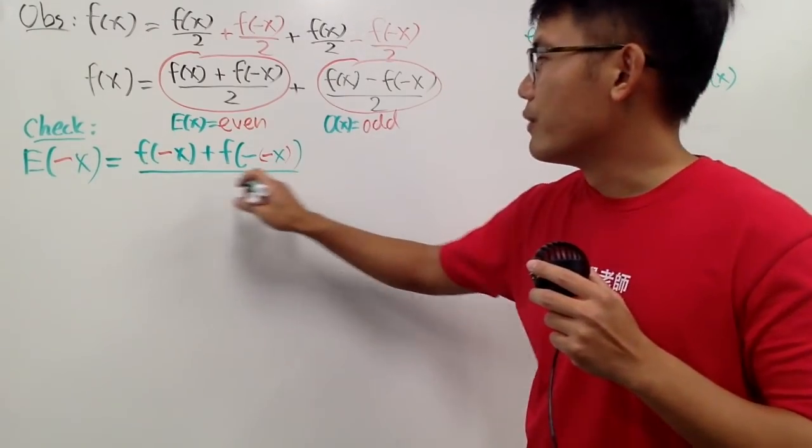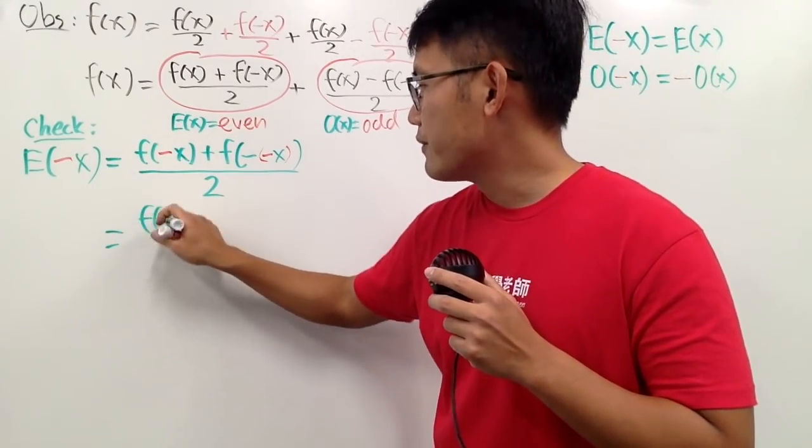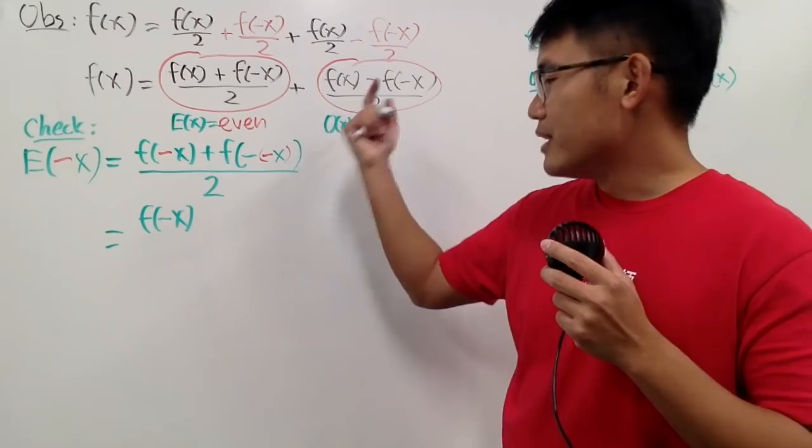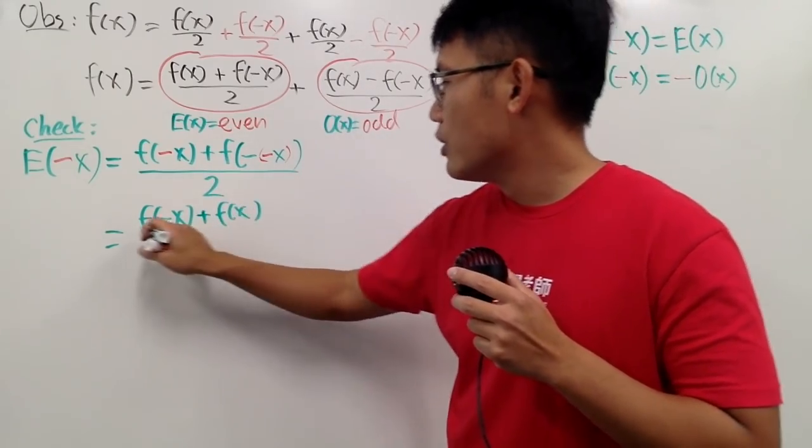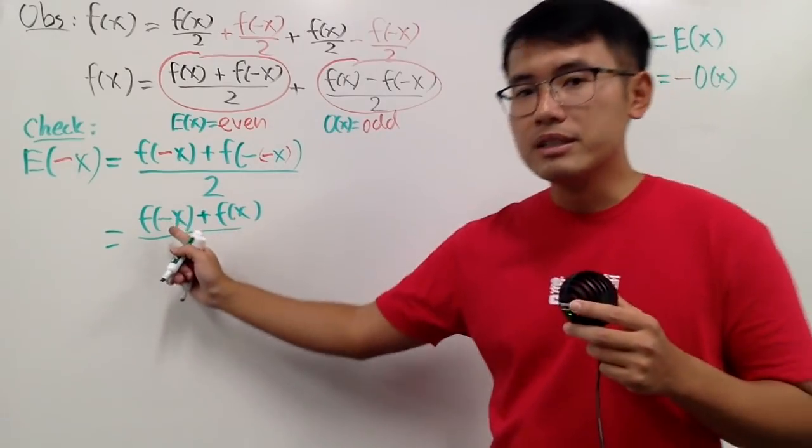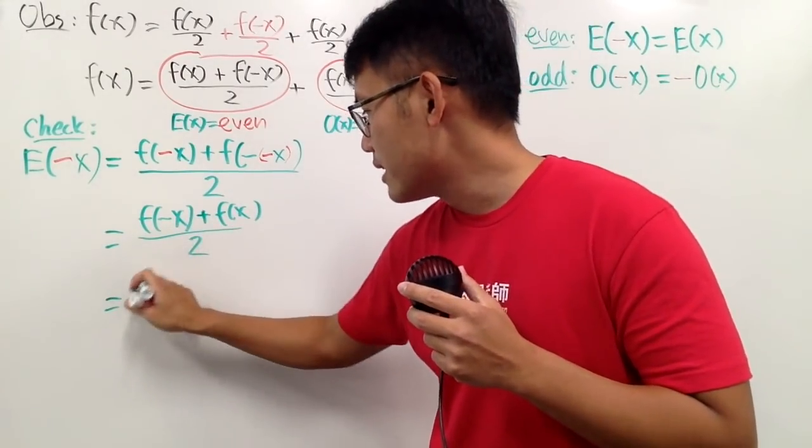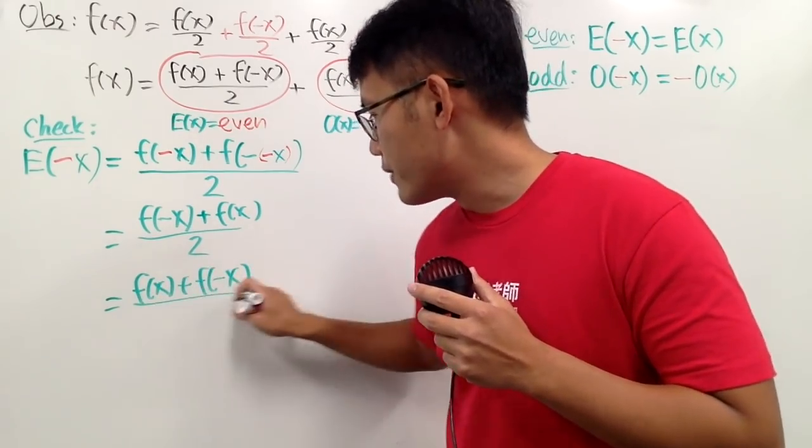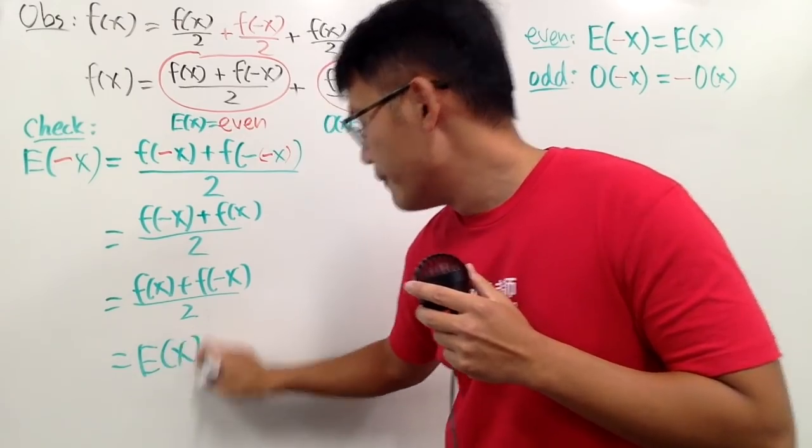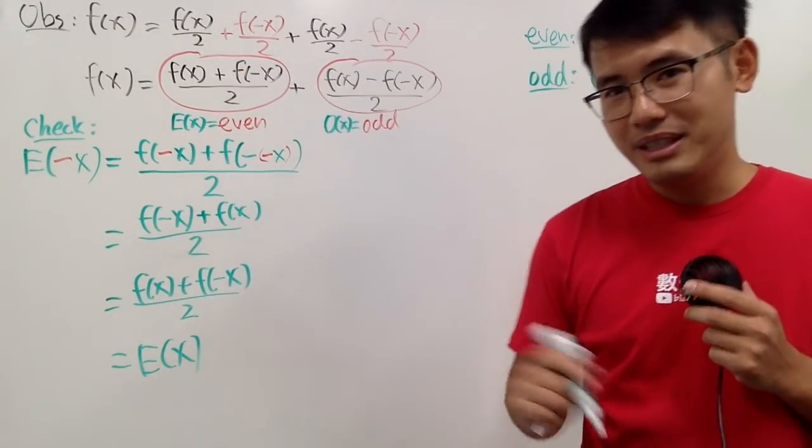And this is all over 2. And now you see, this is just f of negative x. And negative times negative is positive. So this is plus f of x over 2. And because the order of addition doesn't matter, so you can change that. This is the same as f of x plus f of negative x over 2, which is just the original E of x. So we know this has to be even.